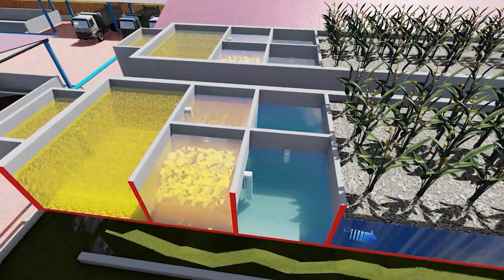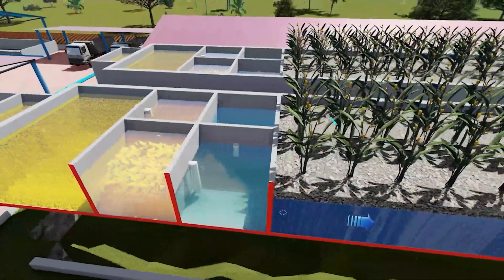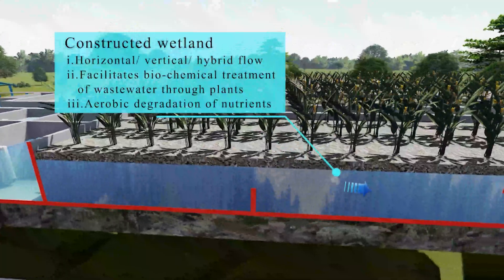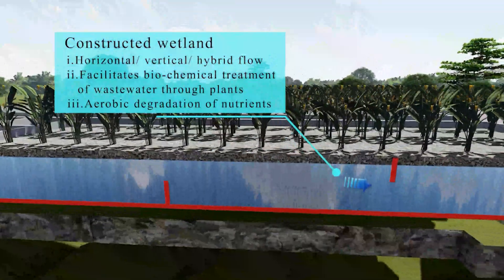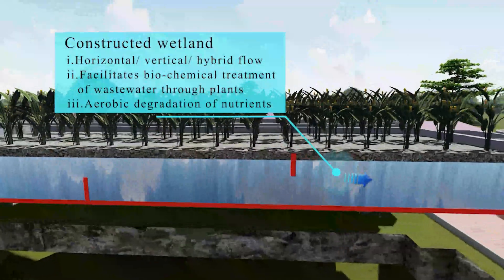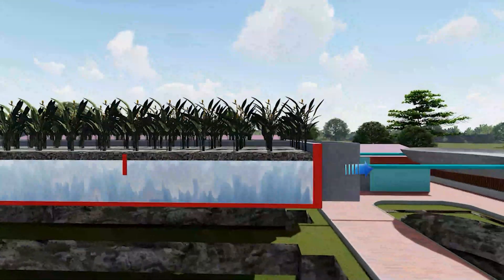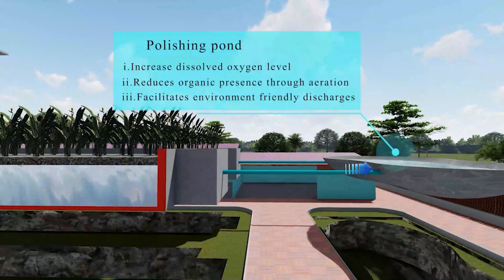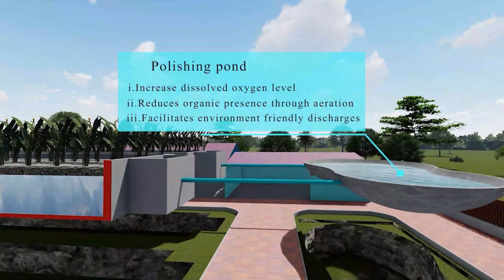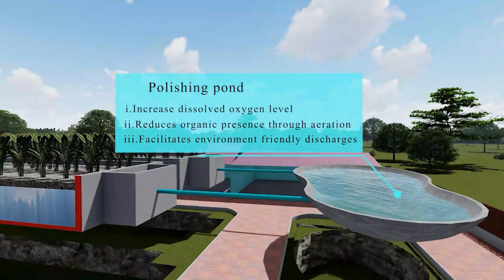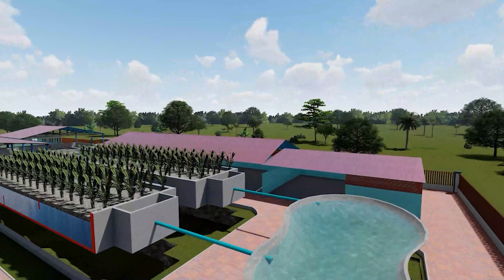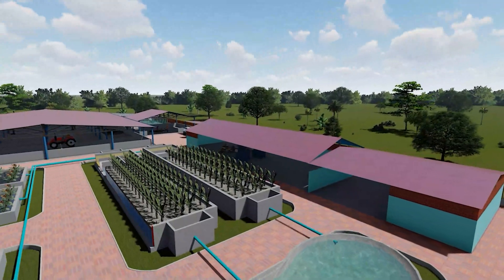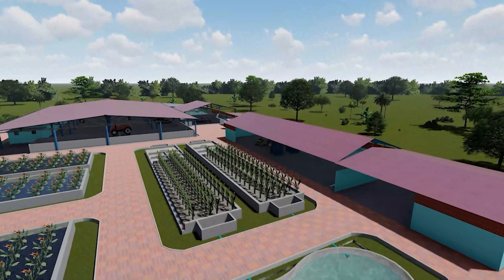The treated wastewater is then channeled through a constructed wetland for further aerobic degradation of pollutants, primarily nutrients like nitrogen, phosphorus, and potassium. The final stage involves a polishing pond, where pathogens are eradicated, rendering the wastewater compliant with effluent discharge standards.